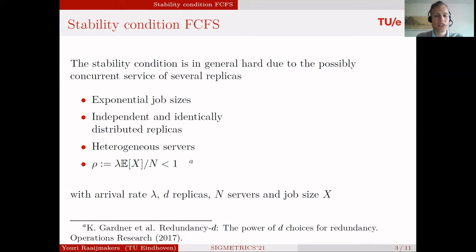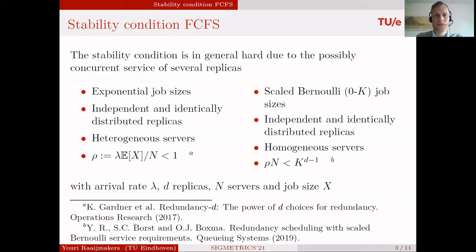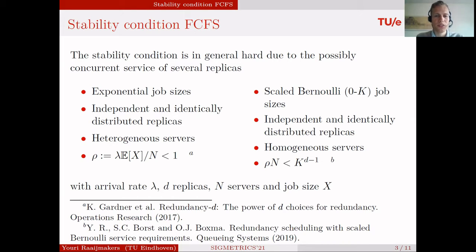Note that this stability condition does not depend on D and is therefore the same for having no replication or full replication. The other scenario for which the stability condition is known is for the distribution scaled by null — where the job size is either zero or k with some probability. Again, for IID replicas and homogeneous servers, the stability condition is given in the fourth bullet point. There is a term rho times the number of servers, but since rho has a division by N in its definition, the stability condition actually does not depend on the number of servers. So for exponential job sizes it does not depend on D, and for the null distribution it also does not — a contrast between the two conditions.